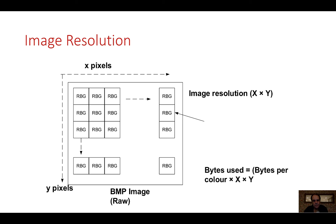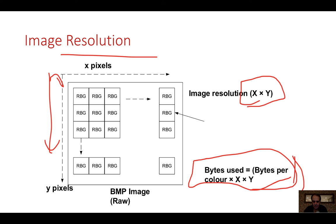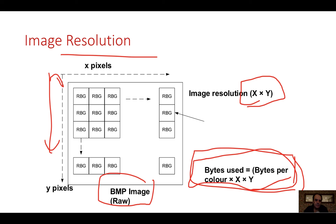We have image resolution: the more pixels across and down, the higher the resolution. The number of pixels is X times Y. The number of bytes used is the bytes-per-pixel times the number of pixels. In RAW format — which is what a bitmap stores — we typically have 24-bit values for each pixel.